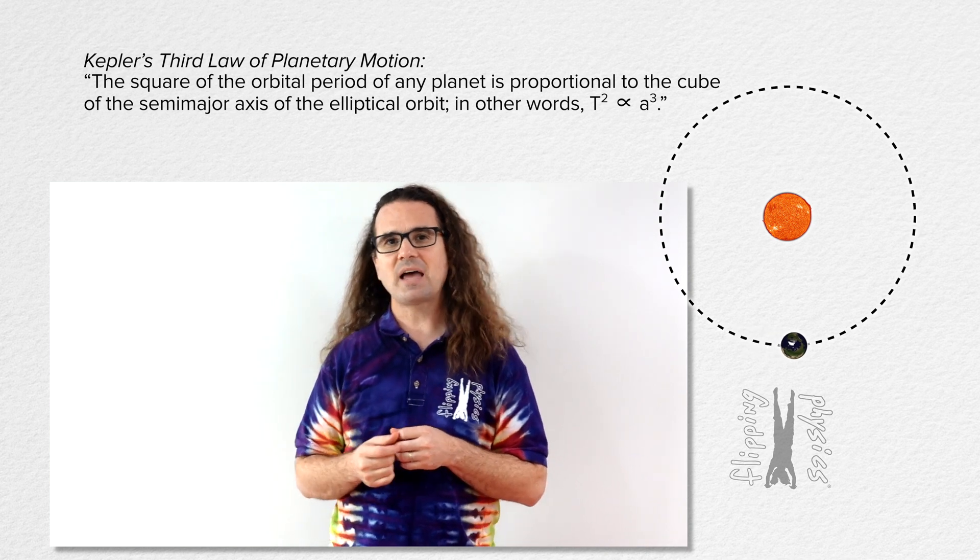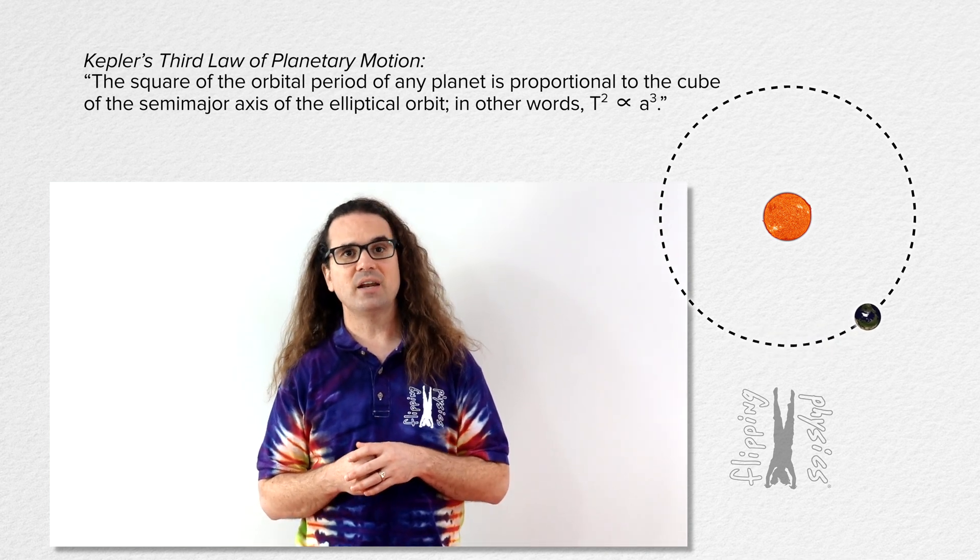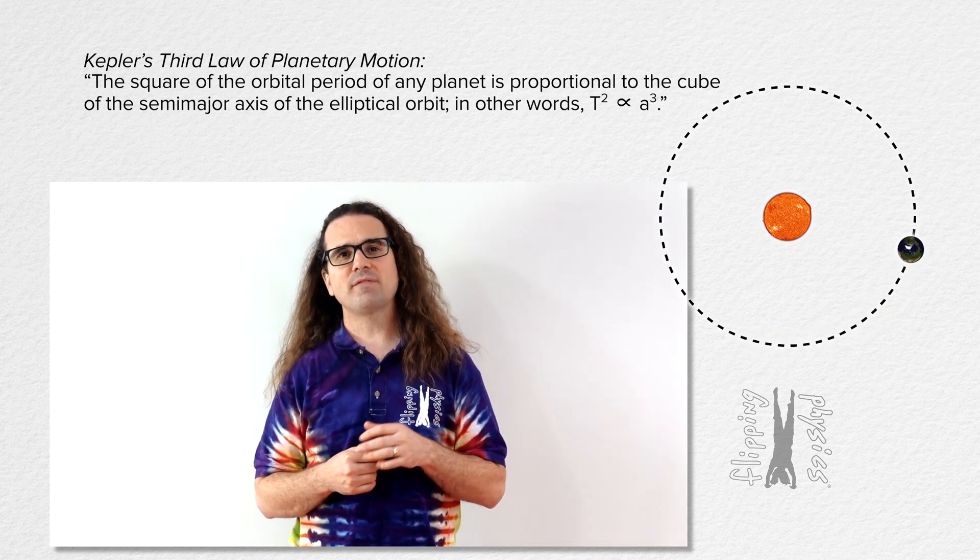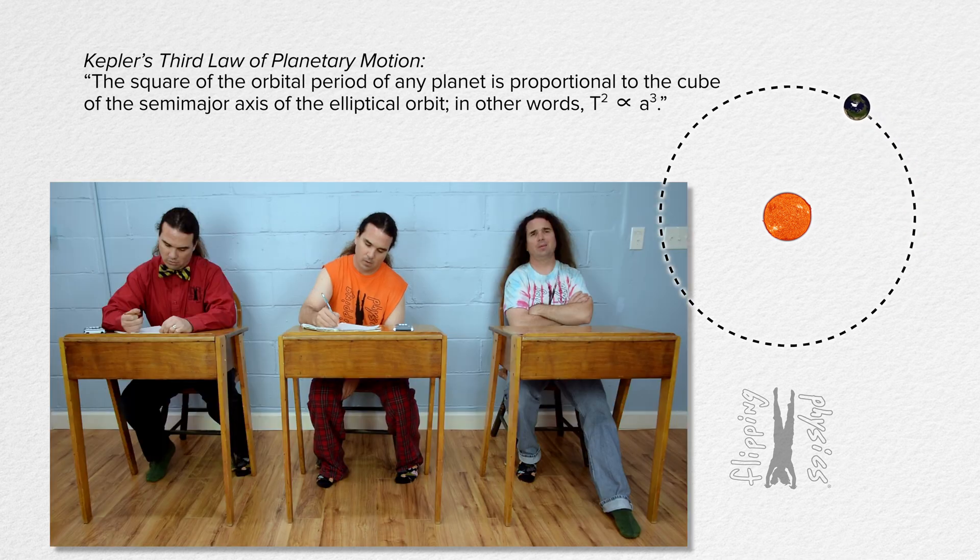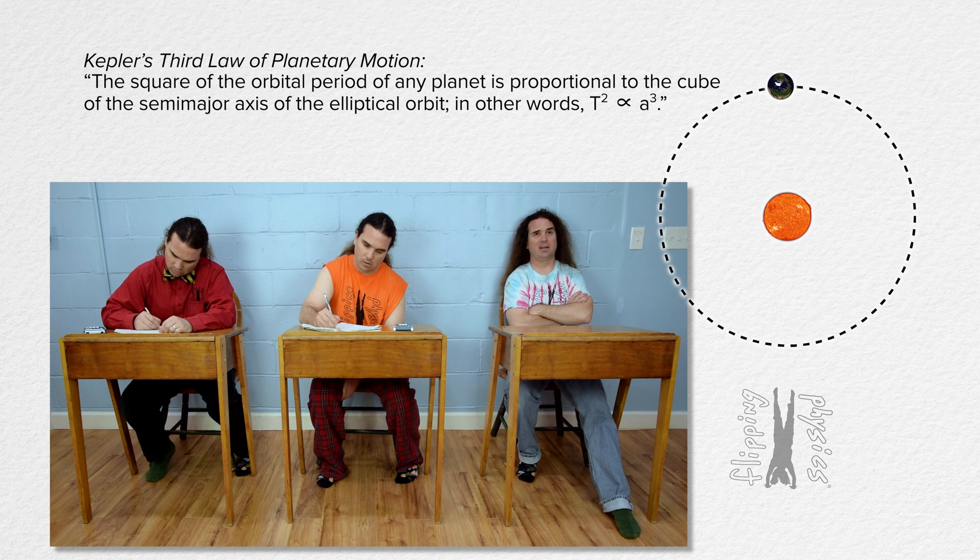Bo, start with the free body diagram of all the forces acting on a planet and then begin solving for the relationship between period and semi-major axis. The only force that acts on a planet in orbit is the force of gravity from the Sun.